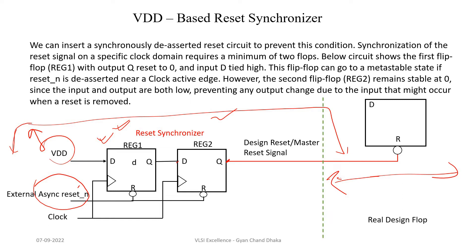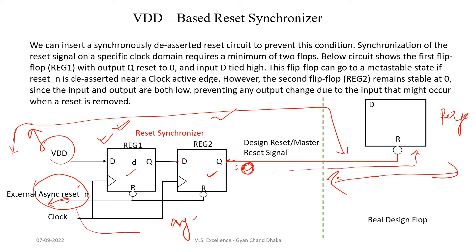During reset assertion, whenever the reset gets asserted, this first flip-flop will get reset and this second flip-flop will also get reset. Once it gets reset, assuming this is active-low reset, this output will become zero and this will reset all our design flip-flops.